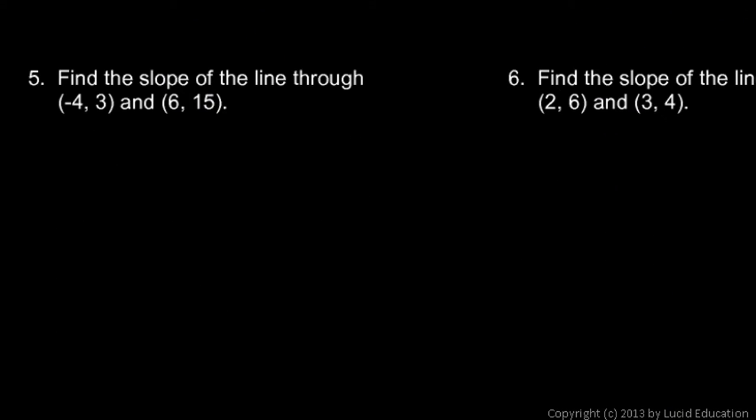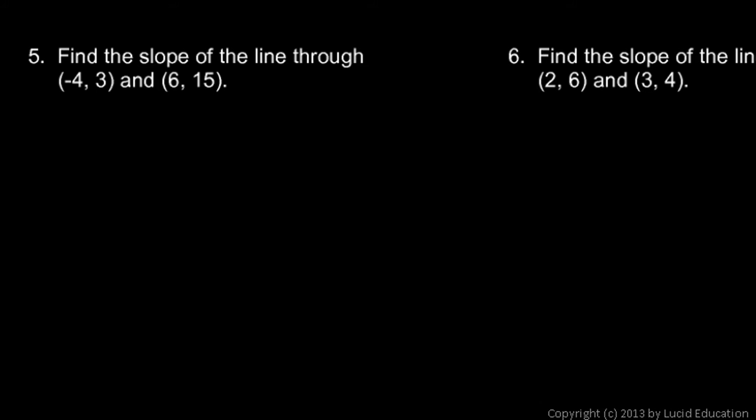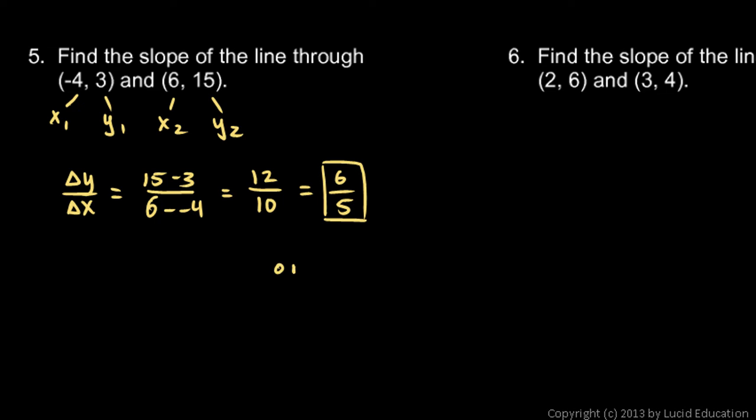Number five, find the slope of the line through these two points. So this is point one, that's x1 and y1, and this is point two, that's x2 and y2. And the change in y over the change in x, the change in y will be y2 minus y1. That's 15 minus 3, and x2 minus x1 is 6 minus negative 4. 15 minus 3 is 12, and 6 minus negative 4 is 10. And 12 over 10 reduces to 6 over 5, so this line has a slope of 6 fifths, or you could say it has a slope of 1.2.